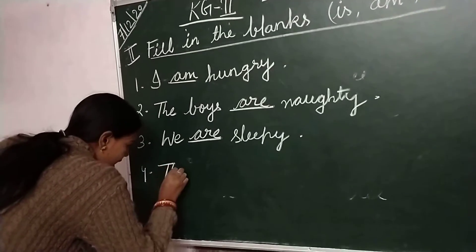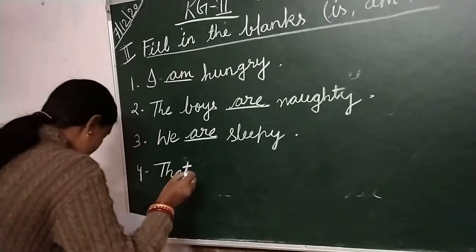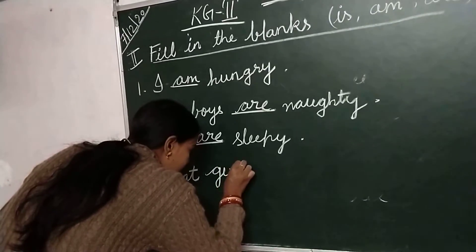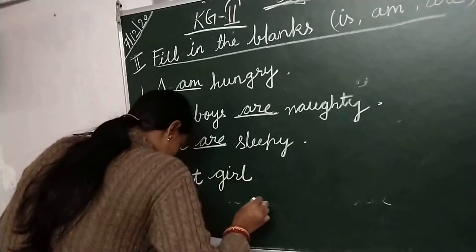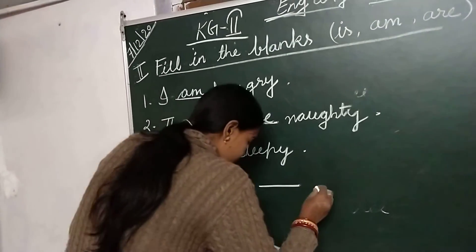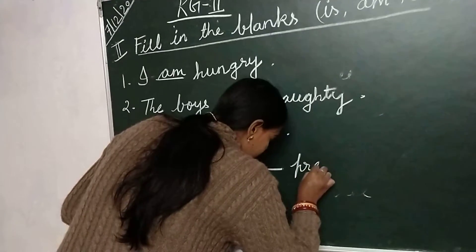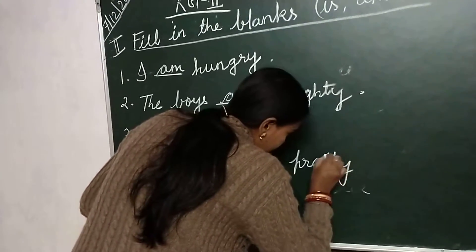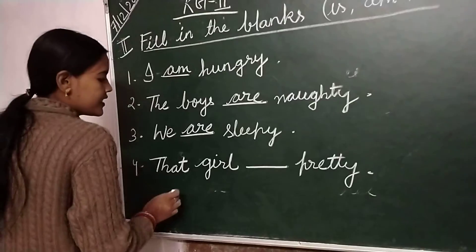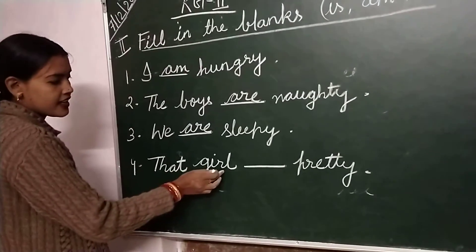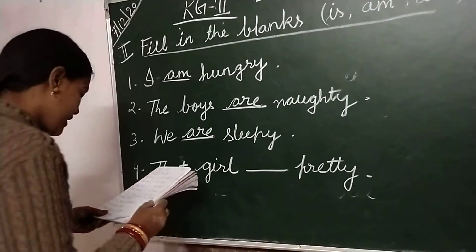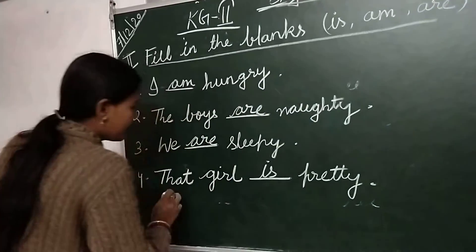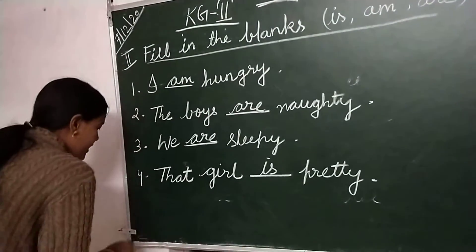Number 4 is: that girl dash pretty. Write down: that girl is pretty.